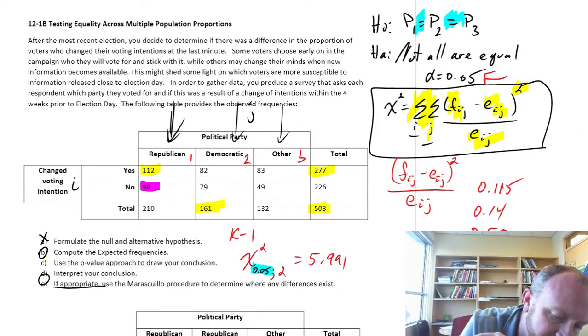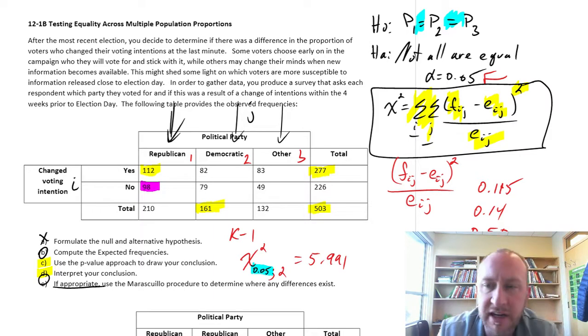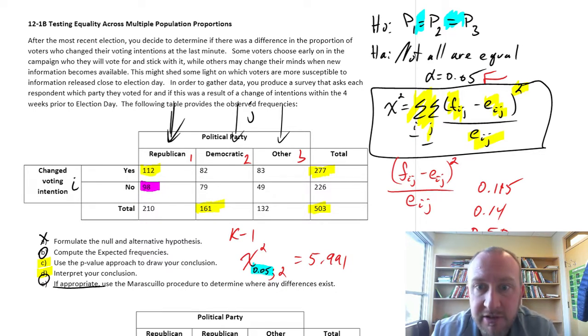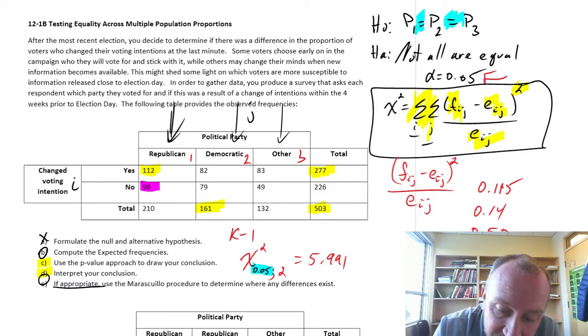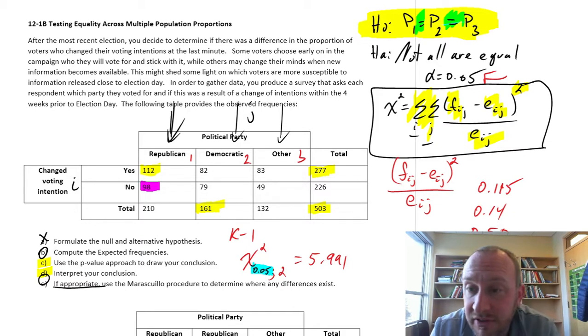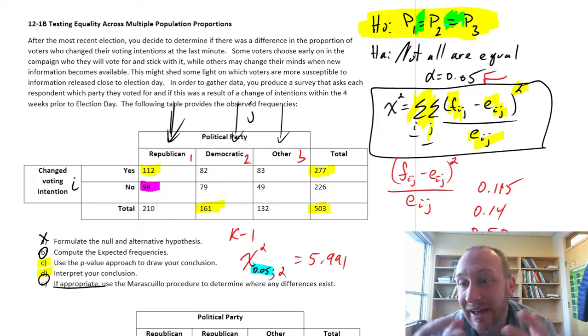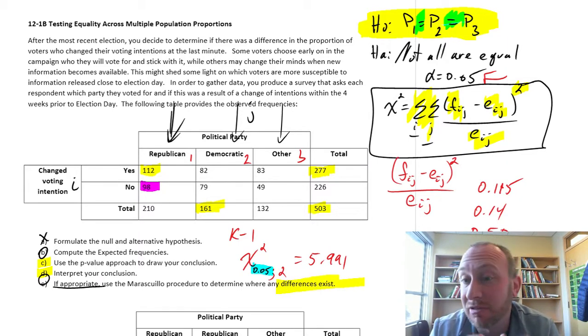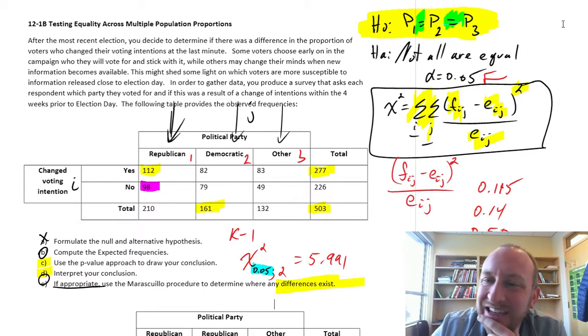We have responded to C. I just gave you my interpretation for Part D. Part E, well, if appropriate, use the Marascuilo procedure to determine where a difference exists. Well, here we just said we don't have evidence to reject, so our evidence in this case supports the null hypothesis that all of our population proportions are equal. So if I've already shown that they're not different, why would I go and look to see where is the difference? So this problem, there's no reason to do any further analysis. We've shown that there is not a difference in the population proportions. Okay, good. I hope that was helpful. That's all there is to it. Thanks for watching. Bye-bye.